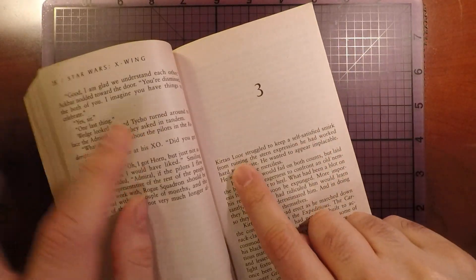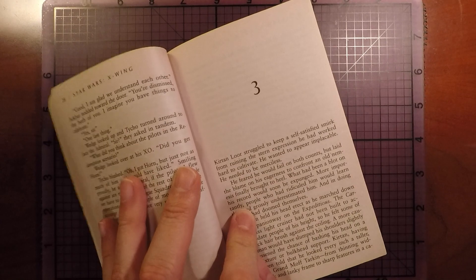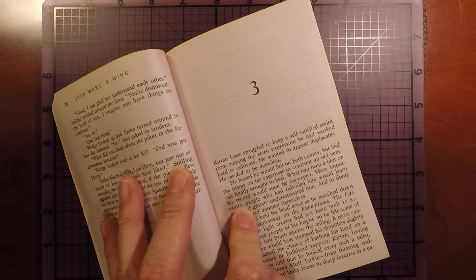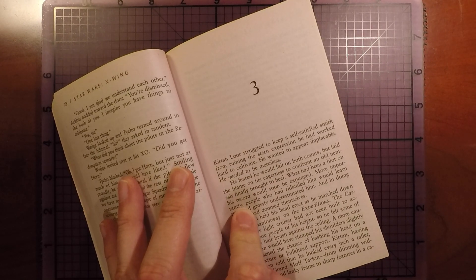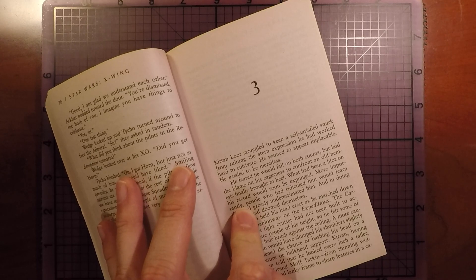So here we are. We're on Chapter 3. Kirtan Loor, number one. Look at that name. That does not sound like the name of a hero, does it? Loor. Yeah. You know what words like lure?